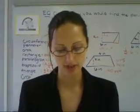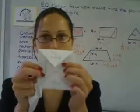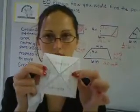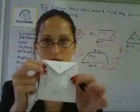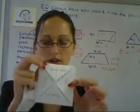On the inside flaps, you are going to write circle, trapezoid, triangle, and parallelogram.